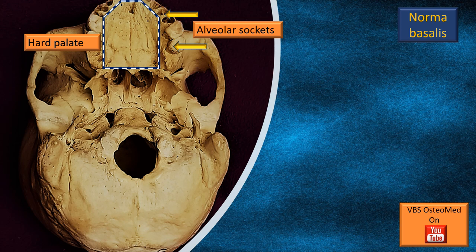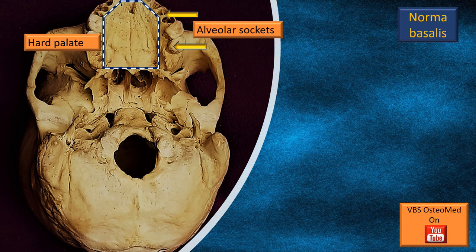There are two items labeled and discussed here. The flashing arrows refer to the maxillary alveolar sockets where the adult maxillary dentition is attached. You can see that there are two teeth present; the rest have been removed. You can also see the hard palate, which forms a partition between the oral cavity and the nasal cavity — that is the area shown by the flashing region.